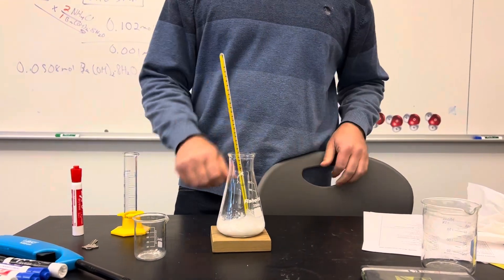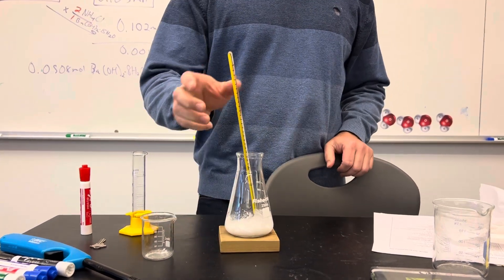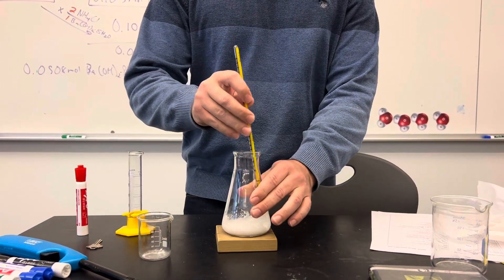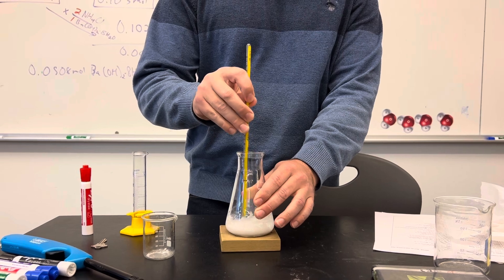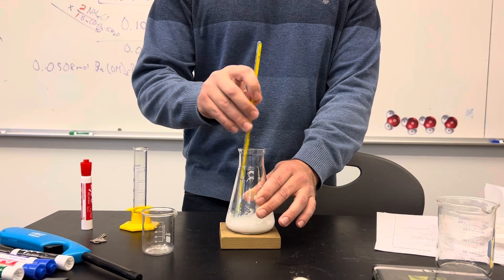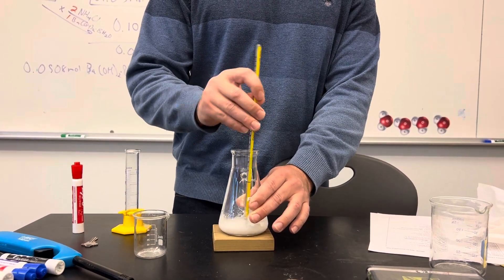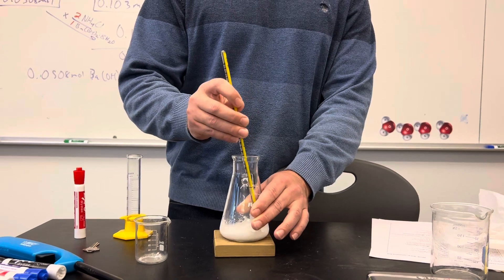In this demonstration we took some barium hydroxide octahydrate and we reacted it with ammonium chloride, two solids, one of which is a hydrate. When you react them you get a double replacement reaction where you get barium chloride and ammonium hydroxide, and you get water liberated from the crystal lattice that it was in as a hydrate.